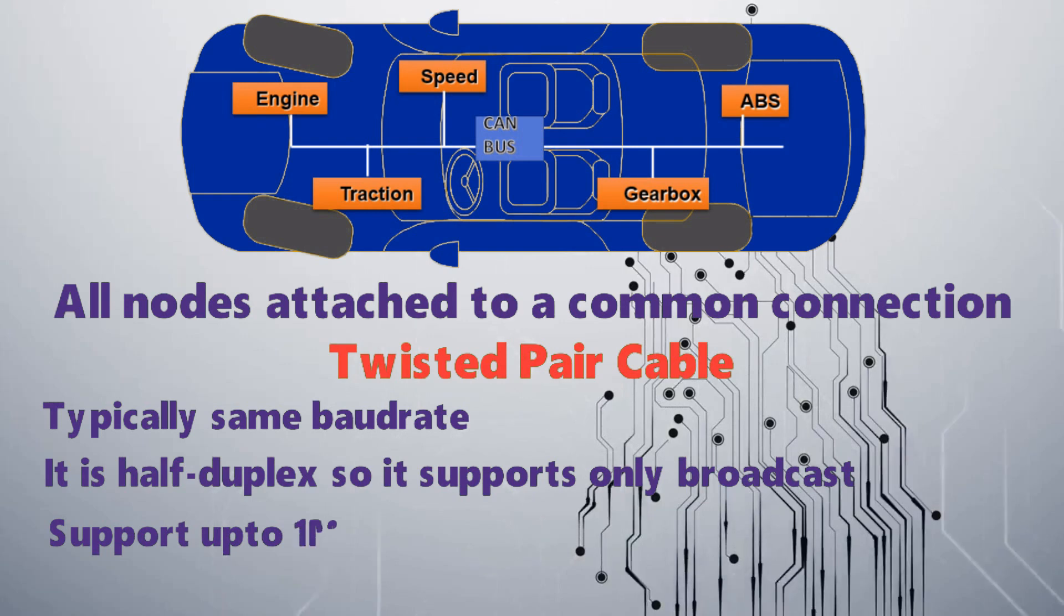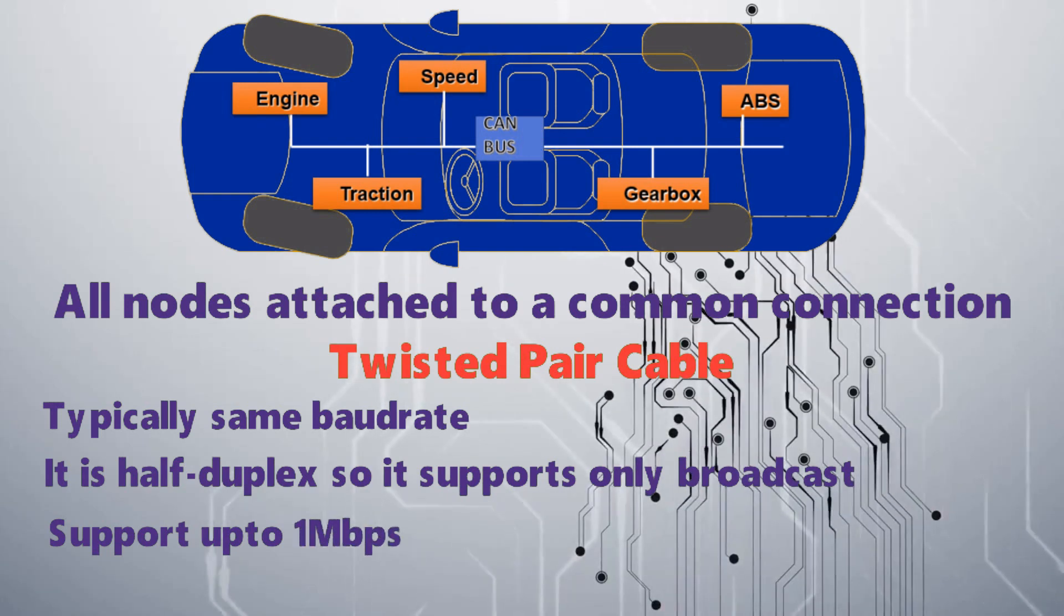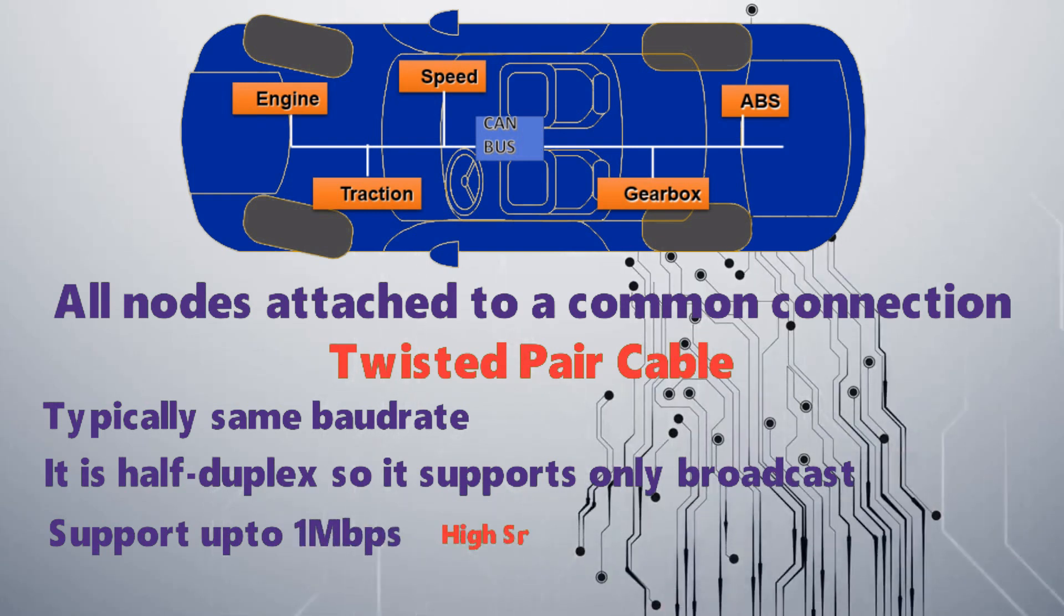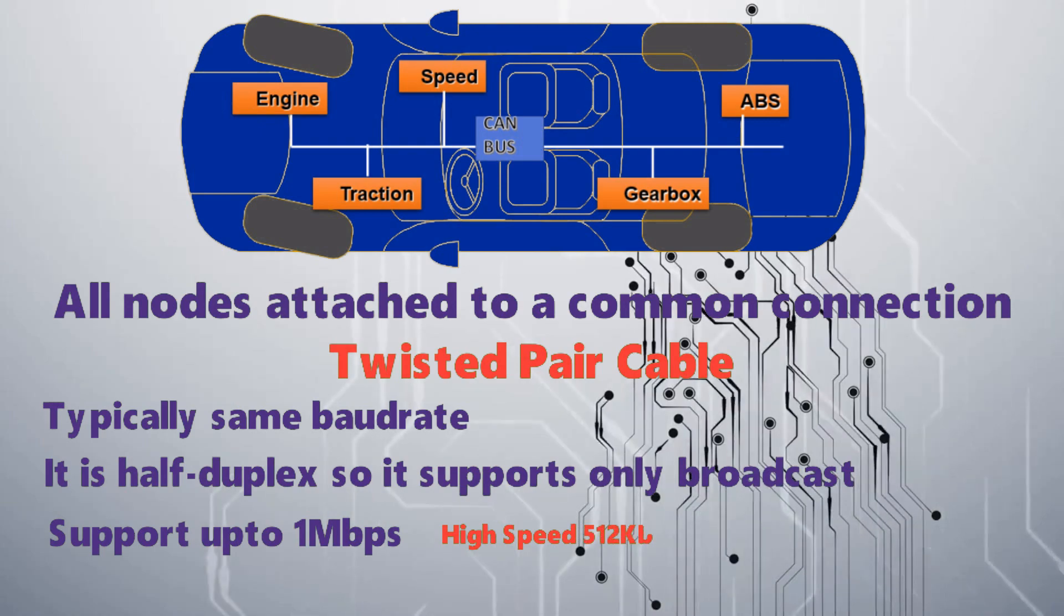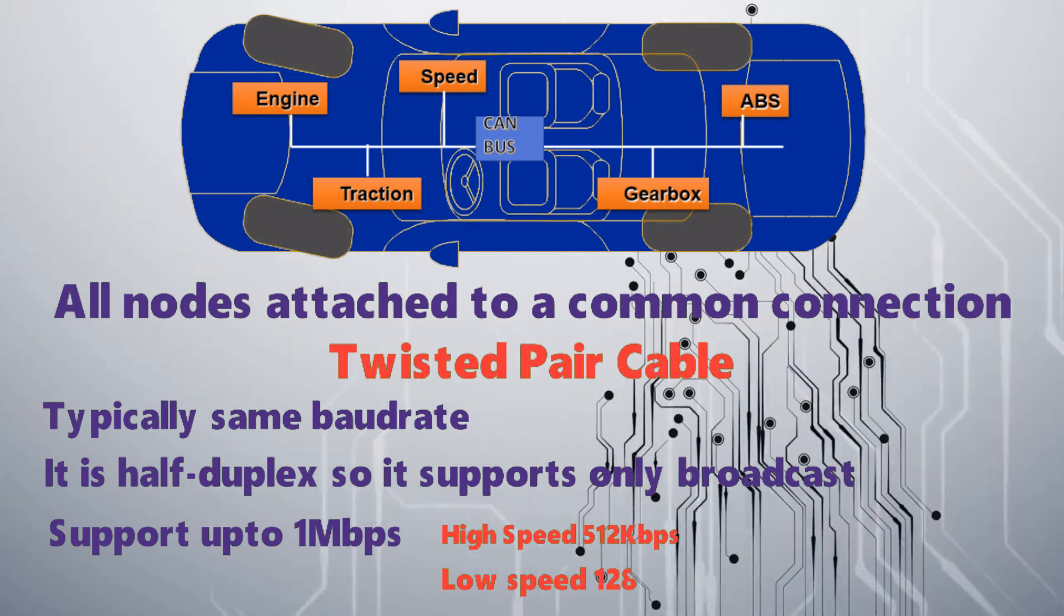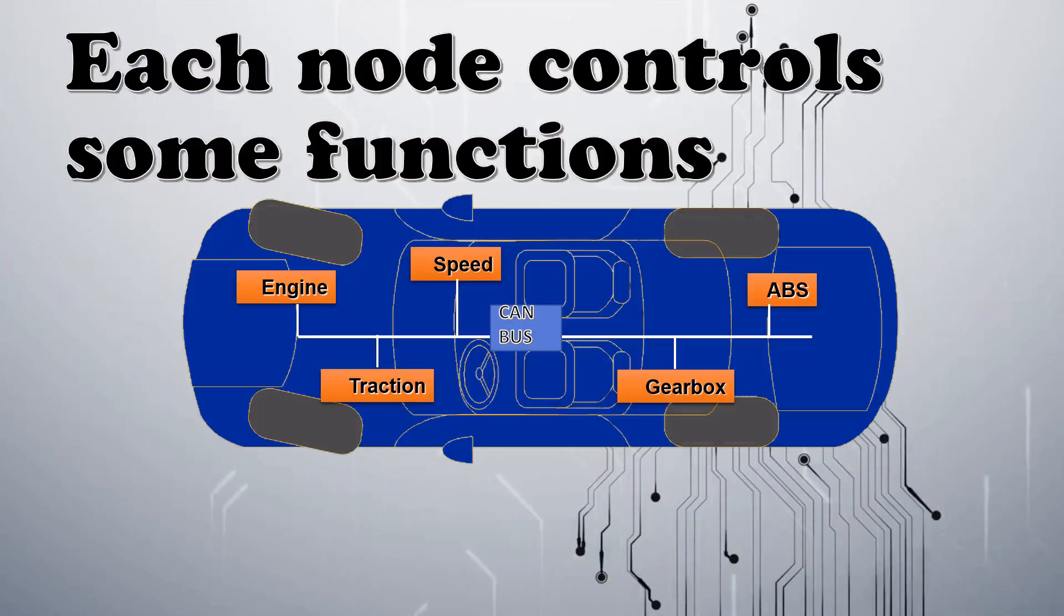CAN bus supports up to 1 Mbps. High-speed CAN bus supports 500 Kbps. Low-speed CAN bus supports 128 Kbps.